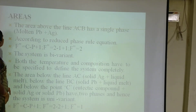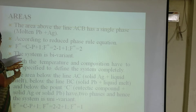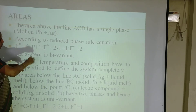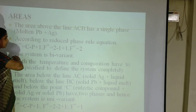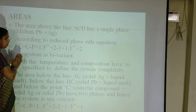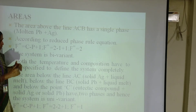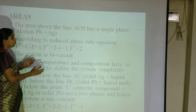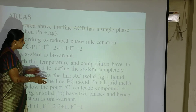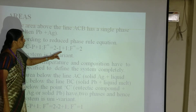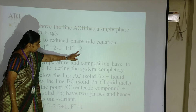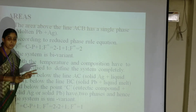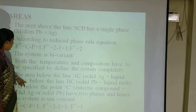At the eutectic point, when you apply the reduced phase rule, you get a degree of freedom of 0 — that is non-variant. At the eutectic temperature and point, the composition is 97.4% lead and 2.6% silver. The area above the curve ACP is a single phase — all liquid — because it is above the melting point of both silver and lead. Applying the phase rule here gives bivariant — both temperature and composition can vary independently.